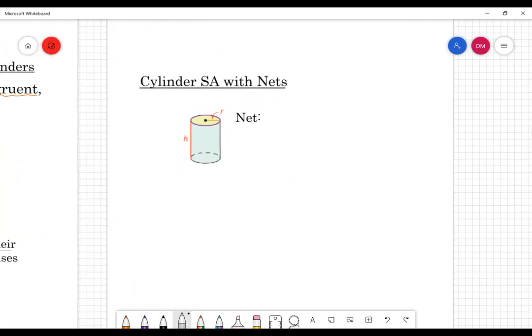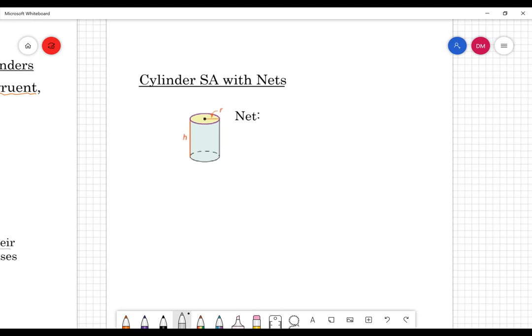So we are moving on today to talking about cylinder surface area. Cylinder surface area, we are going to do by drawing a net first. So the net of a cylinder, think about a can. If you have like a soup can or some other type of canned good in your home.